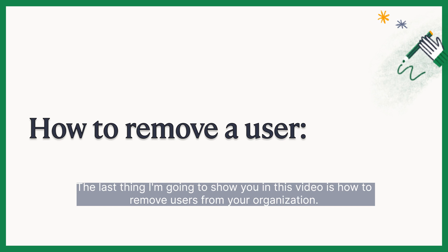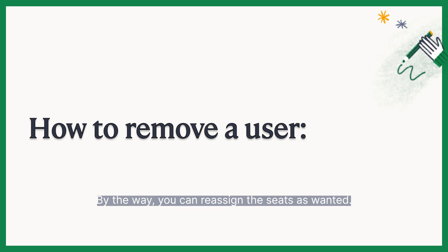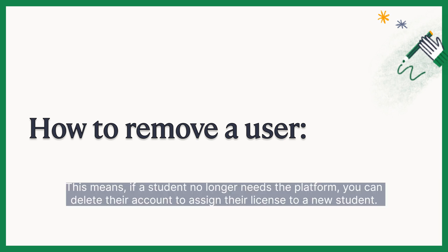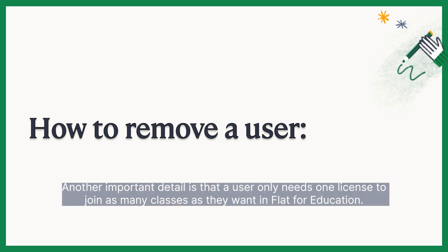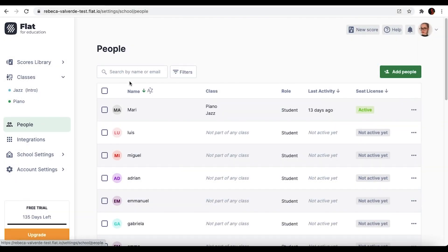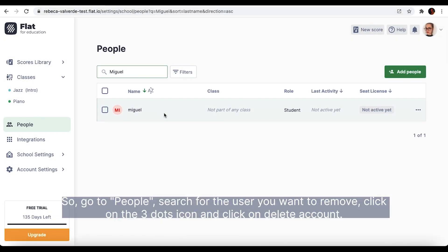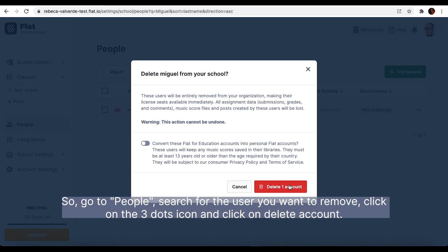The last thing I am going to show you in this video is how to remove users from your organization. By the way, you can reassign the seats as wanted. This means, if a student no longer needs the platform, you can delete their account to assign the license to a new student. Another important detail is that a user only needs one license to join as many classes as they want in Flat4Education. So, go to People, search for the user you want to remove, click on the three dots icon and click on Delete account.